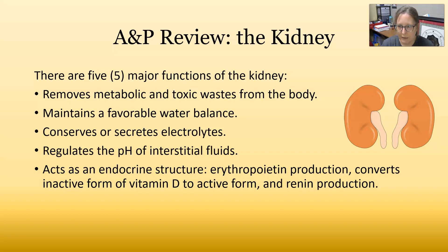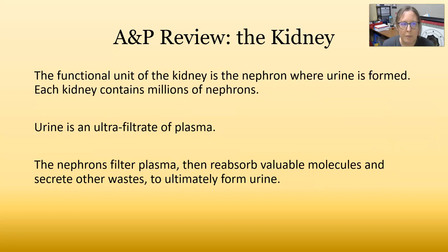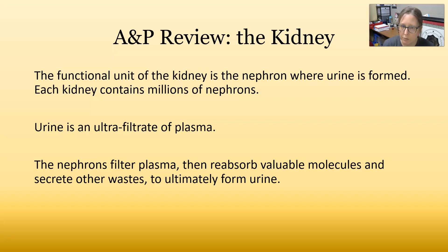Obviously the kidneys are what produces urine, and urine is going to be the subject of the next few videos. The functional unit of the kidney is the nephron, and this is where urine is formed. Each kidney contains a million nephrons, so if you have two kidneys, you have two million nephrons.